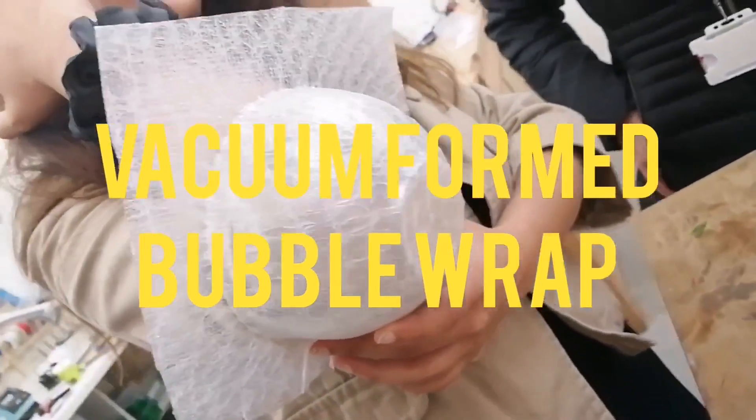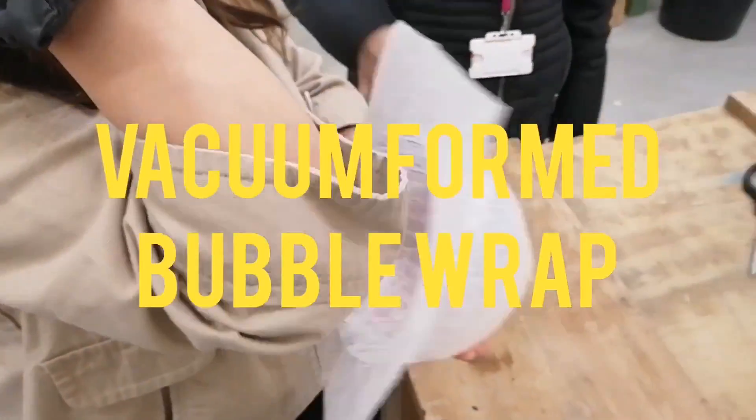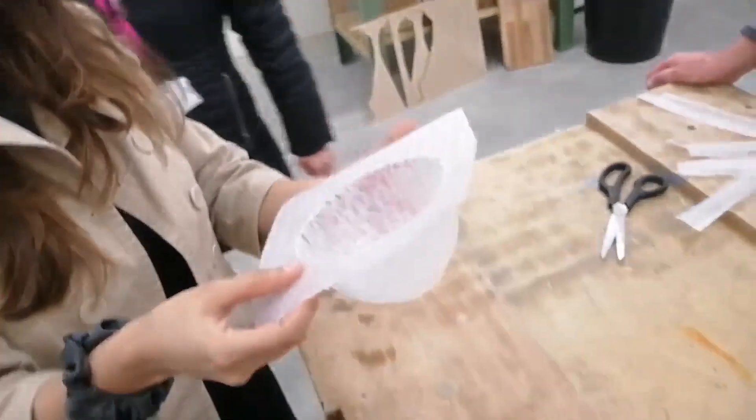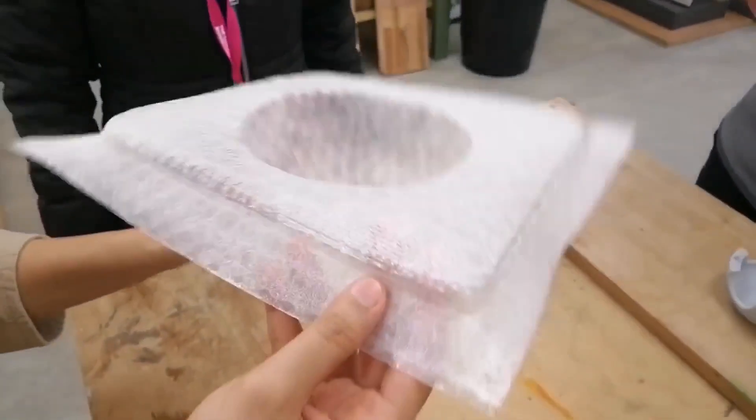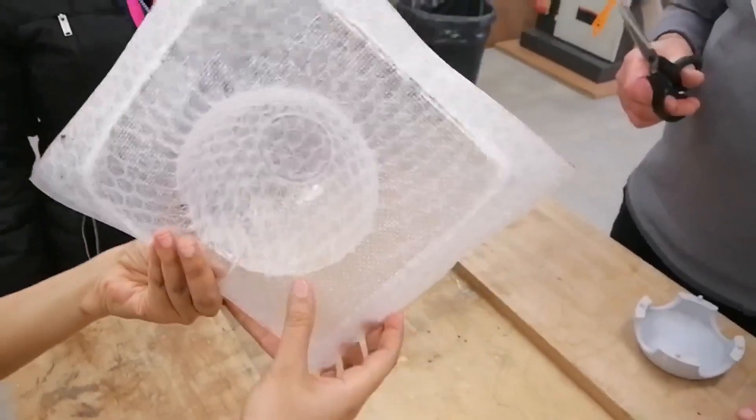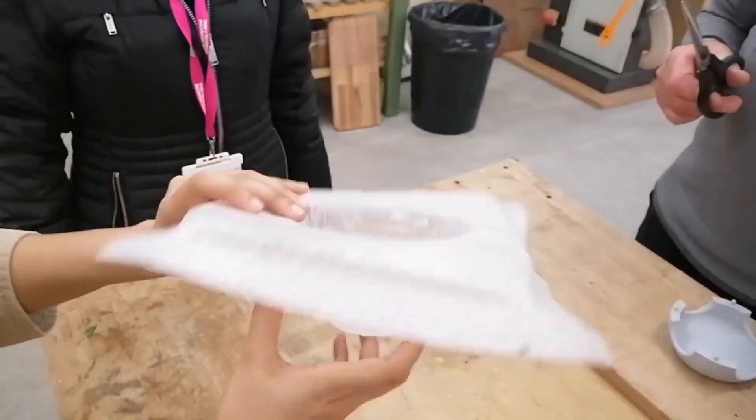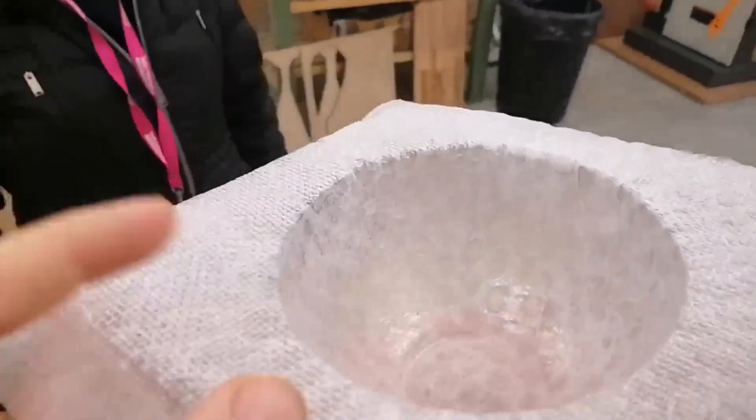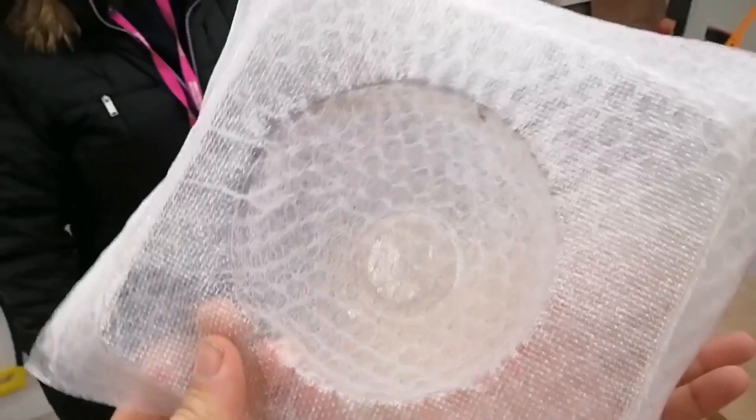Also on Instructables, Blorg demonstrates how to turn bubble wrap into a flexible LDPE plastic sheet, perfect for vacuum forming. This is a neat trick, and oddly enough, for as synthetic as the material is, when it's all flattened out, it has this natural, scaly skin quality that's pretty rad. I also have to imagine it would work well for light diffusion, for LEDs or NeoPixels.